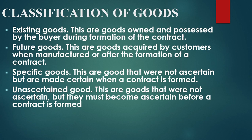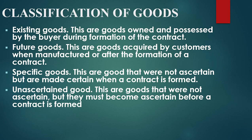Specific goods are goods that were not ascertained but are made certain when a contract is formed. Unascertained goods are goods that were not certain but must be ascertained before a contract is formed. For instance, crops to be planted and sold to a certain company — such as BAT contracting a farmer to plant tobacco. The contract will be executed when the farmer plants the tobacco, it grows, becomes harvested, and the BAT company pays the farmer after the tobacco has matured and is harvestable.